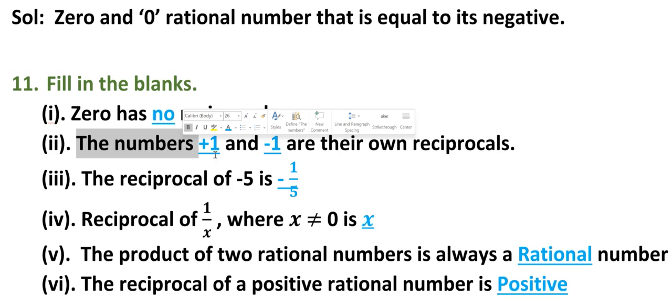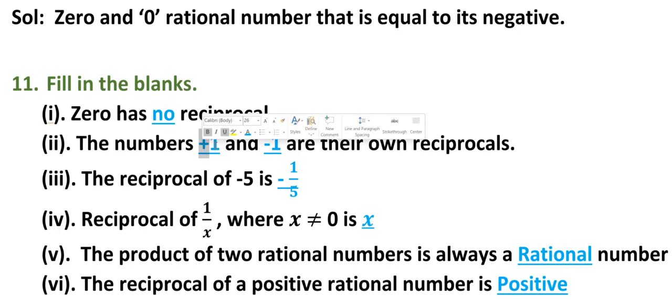The numbers blank and blank are their own reciprocals. First one is plus 1 and second one is minus 1. The plus 1 and minus 1 are their own reciprocals.